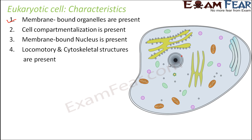Locomotory and cytoskeletal structures are present. Locomotory structures allow cells to move from one place to another — for example, cilia and flagella are the locomotory organs present in eukaryotic cells. Cytoskeletal structures — 'cyto' means cell and 'skeletal' refers to the skeleton. Just as human beings have a skeletal framework, cells also have a skeleton structure that forms the base of the cell. We will talk about cytoskeletal structures in detail later.